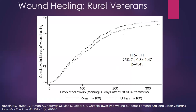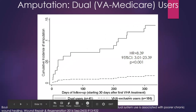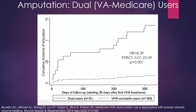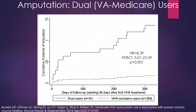We did another analysis with the same data looking at dual users — veterans who used both Medicare and VA care for their wound during the study period. Here the group sizes were very different: 41 dual users versus 186 who used only VA care, because this wasn't our primary sampling aim. We saw a very different result: the lines were quite far apart compared to the previous slide.